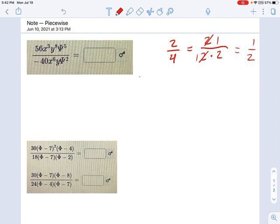In a little more detail, here's what we're doing. We're saying 2/4 equals 2 over 2 times 2, which equals 2 over 2 times 1 over 2, and then that cancels out.